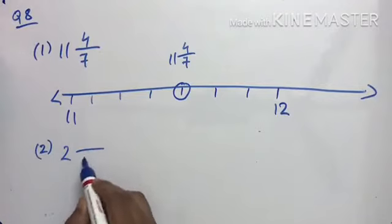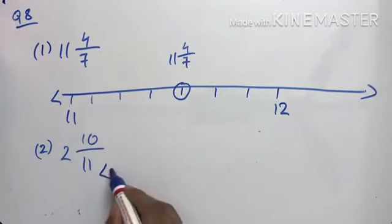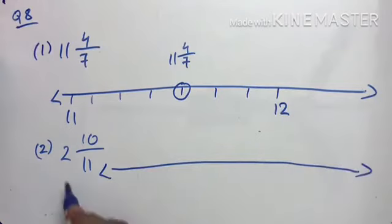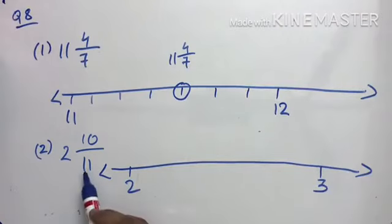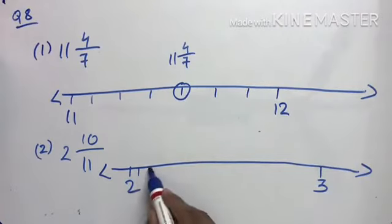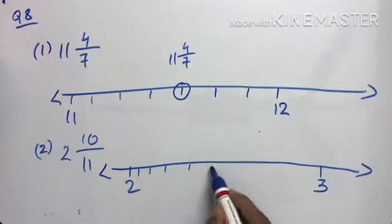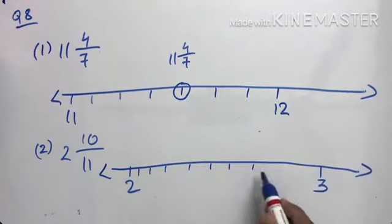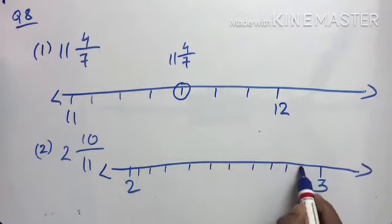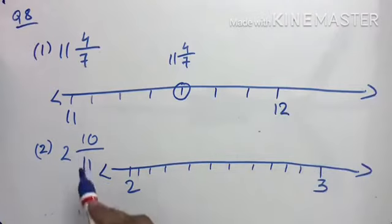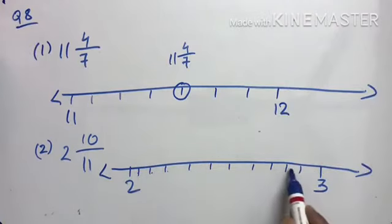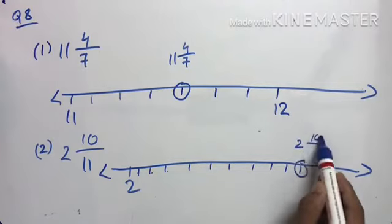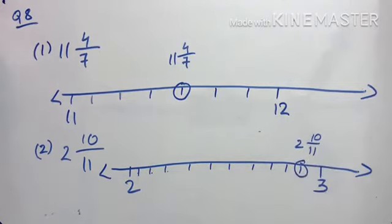For 2 and 10/11: the whole number is 2, so the fraction lies between 2 and 3. Divide that segment into 11 equal parts. Count to the 10th part — that is where 2 and 10/11 is placed on the number line.